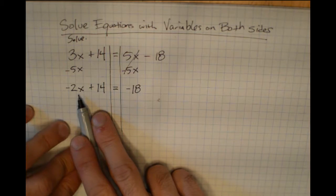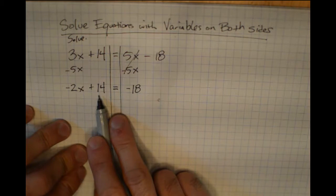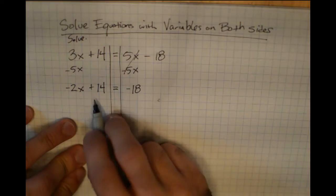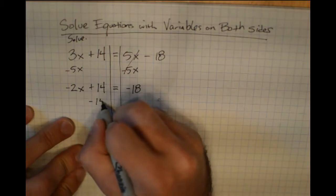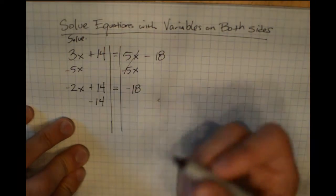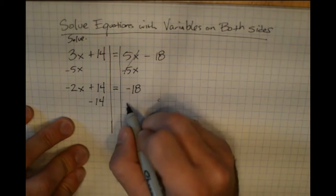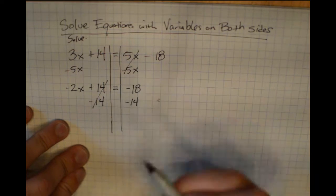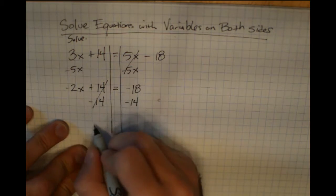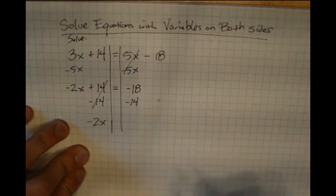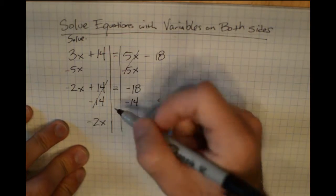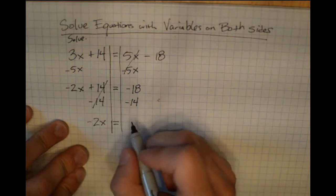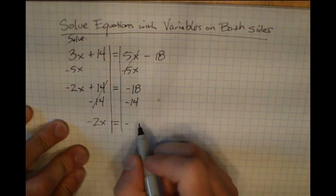Now I have my variable term on the left, but I have a plus 14 there that I don't want. I eliminate it by doing the inverse — subtracting 14 — because that gives me 0. If I do that to the left side, I have to do it to the right as well. 14 minus 14 is eliminated, negative 2x comes down, and negative 18 minus 14 is negative 32.